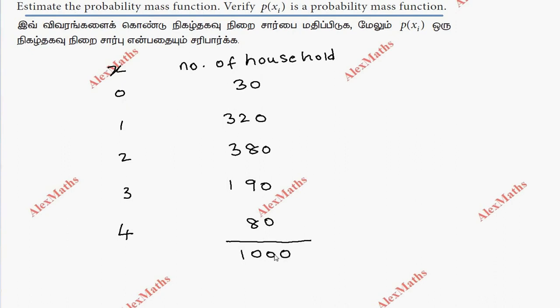So total of 1000 families in the table. 0 car, 1 car, 2 cars. Now we have p of x for these different categories of xi.